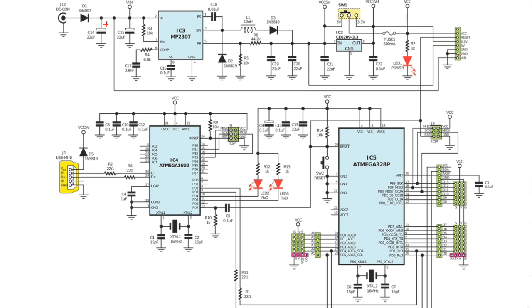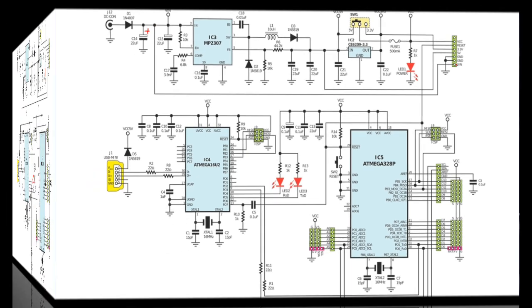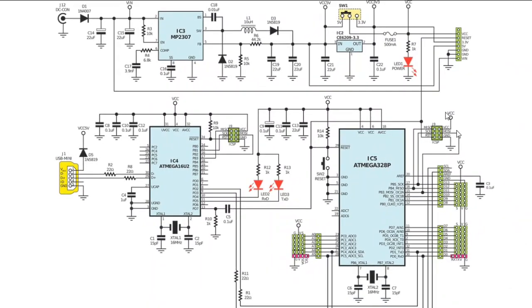Here we have two grounds connected together. We also have VIN coming through — VIN goes directly here because of the dot connection. In this part of the schematic we have VIN routed to two ICs.